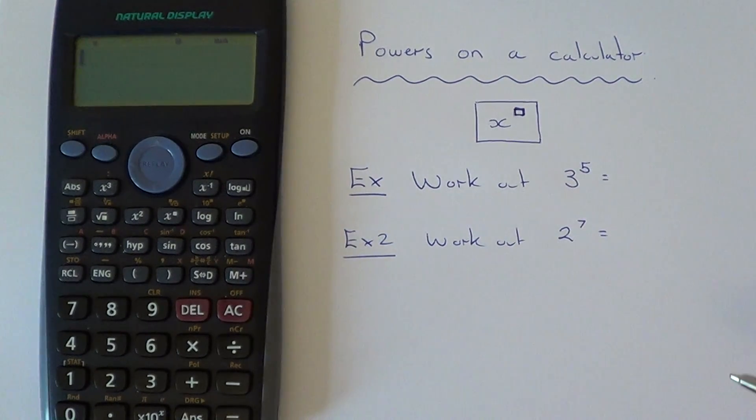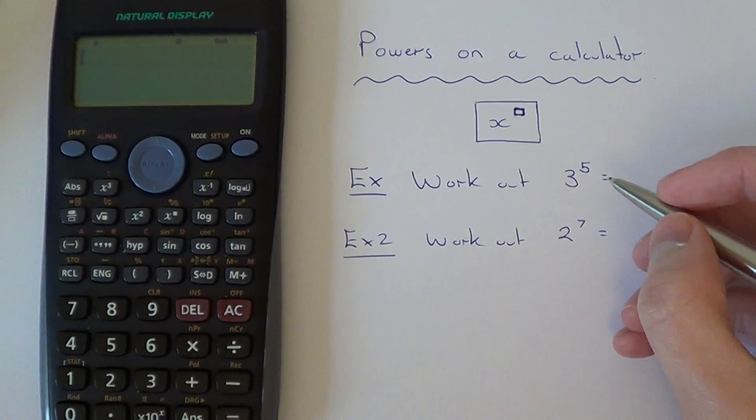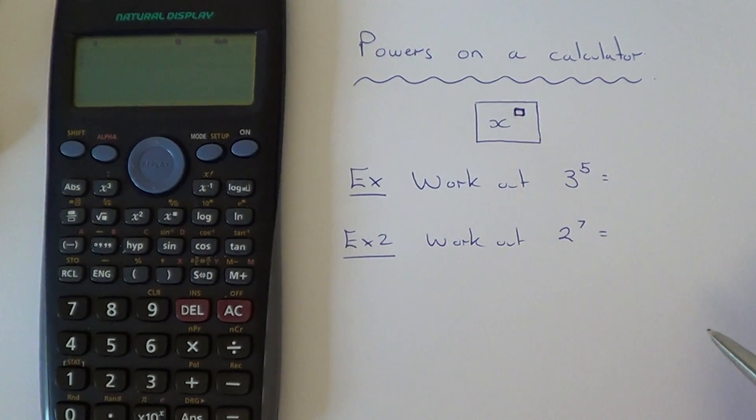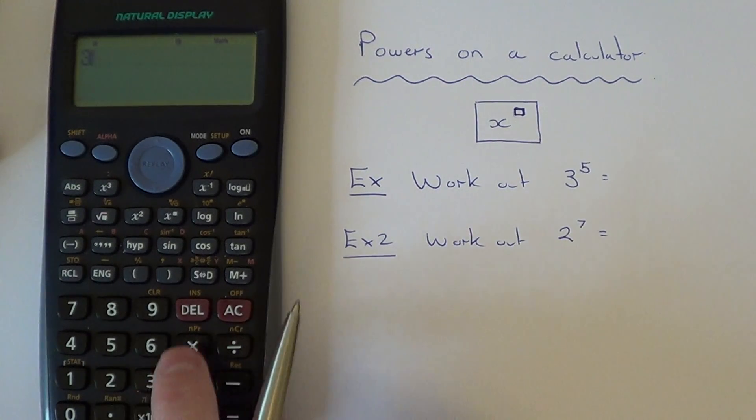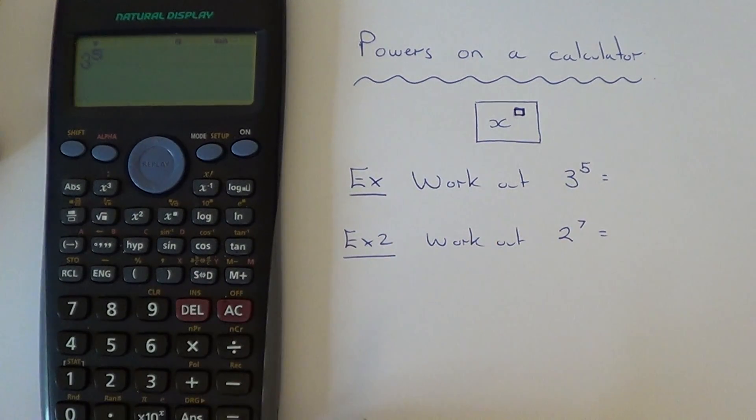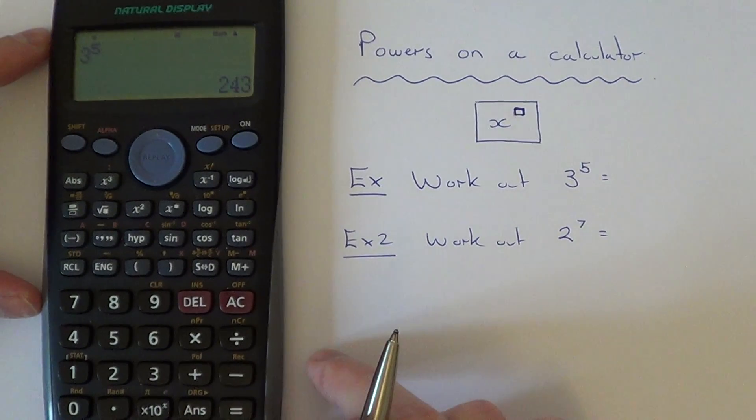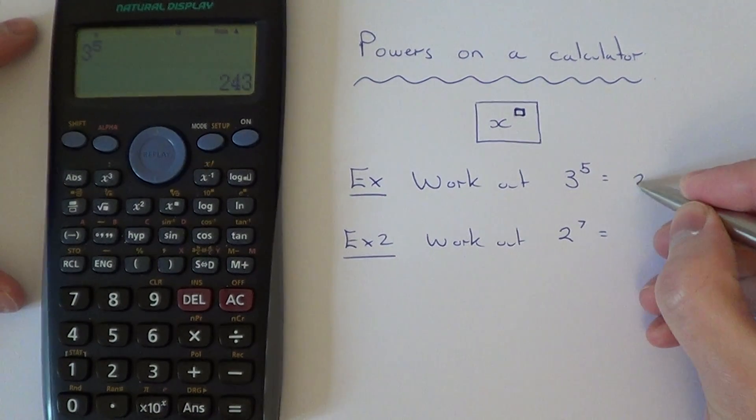Let's have a look at two examples. The first one is to work out three to the power of five. So it's three power five, hit your equals and you get two hundred and forty-three.